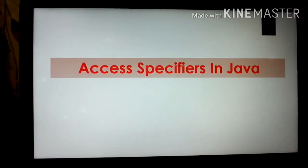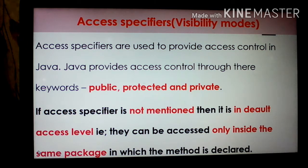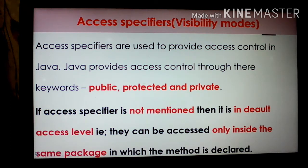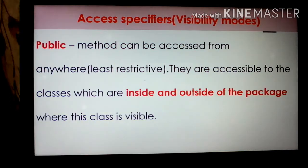Let us study the access specifiers or visibility mods in Java. Access specifiers are used to provide access control in Java. Java provides access control through three keywords: public, protected, and private. It is not compulsory to mention the access specifier with a method or a class variable, but if the access specifier is not mentioned, it is at the default access level — meaning they can be accessed only inside the same package in which the method is declared. Let us see them in detail.